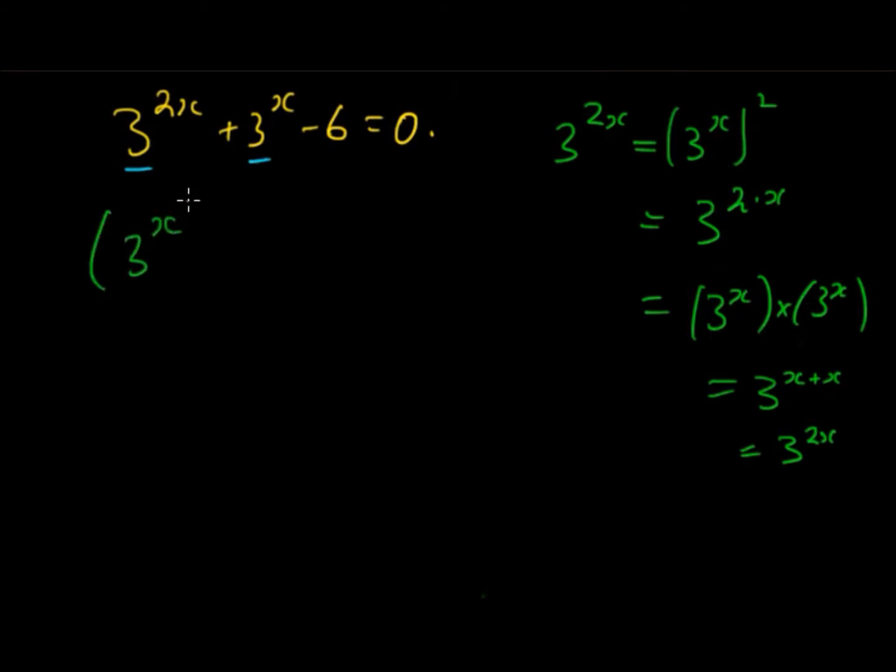So we have (3^x)^2 + 3^x - 6 = 0. Then you can now see that we have these common terms here. So these are both the same value and these are the only terms with x. What I'm going to do here is let a = 3^x. So a is just an arbitrary value. Then this turns this expression into a polynomial.